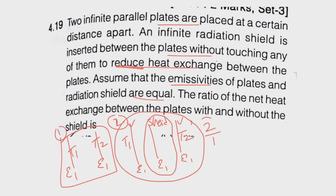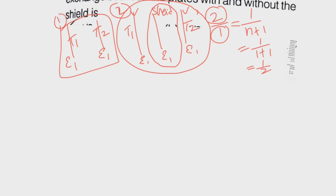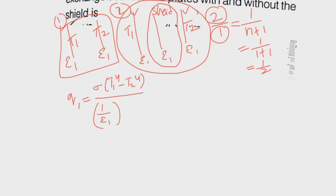We want Q2 by Q1. If you remember the theory class, you can directly get the answer. The answer is 1/(n+1), that is 1/(1+1) = 1/2, where n is the number of shields. Let me give the explanation. Let us write Q for the first case: Q1 equals sigma times (T1^4 - T2^4) divided by (2/epsilon_1 - 1), since emissivity is the same for both plates.